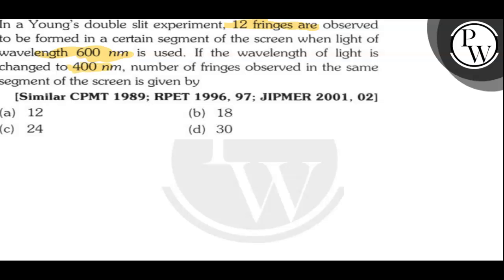changed to 400 nanometer, the number of fringes observed in the same segment of the screen is given by - we have to calculate the number of fringes obtained. Options given are: (a) 12, (b) 18, (c) 24, and (d) 30.